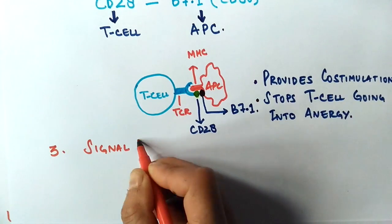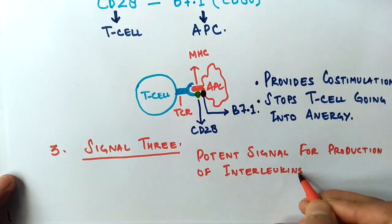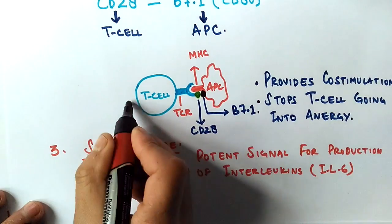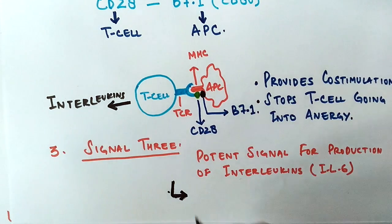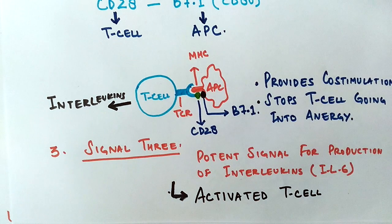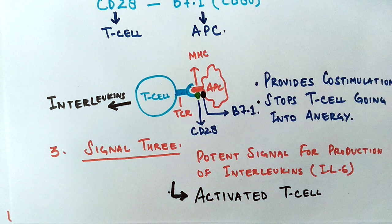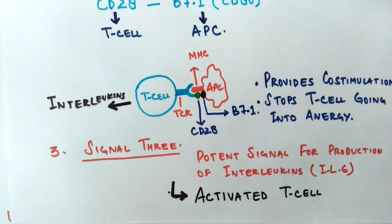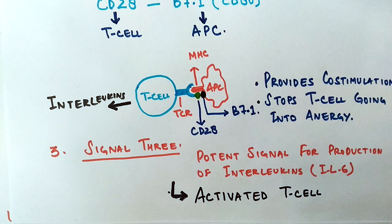Finally we have the third signal which we call a potent signal because it's for the production of interleukin. The T cell releases interleukin and we can say that T cell is activated. This activated T cell can be CD4 positive or CD8, and here in this case we have interacted CD28 with B7 molecule or B7.1 molecule, so we can say it is CD8 positive activation here.